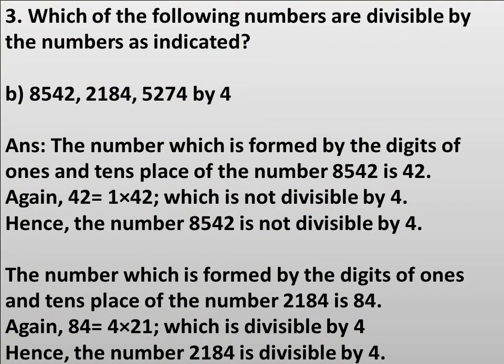Now for part b: which of 8542, 2184, and 5274 are divisible by 4? The divisibility rule for 4 is: if the number formed by the digits of the 1's and 10's place of a number is divisible by 4, then the given number will be divisible by 4.